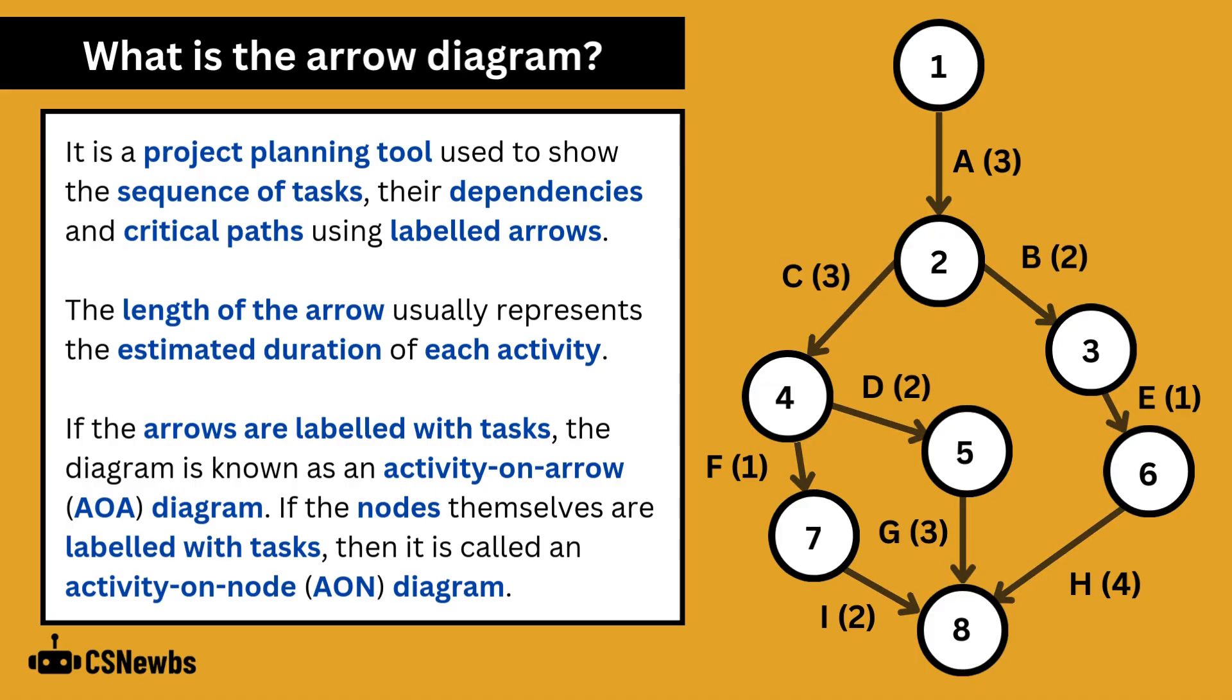If the arrows themselves are labelled with tasks, the diagram may be known as an activity on arrow diagram. If the nodes themselves are labelled with tasks then it's usually called an activity on node diagram.